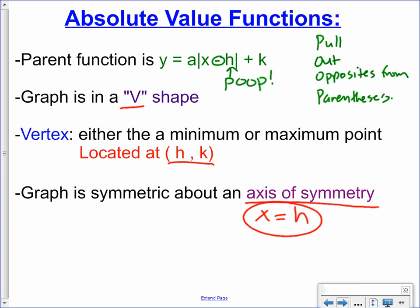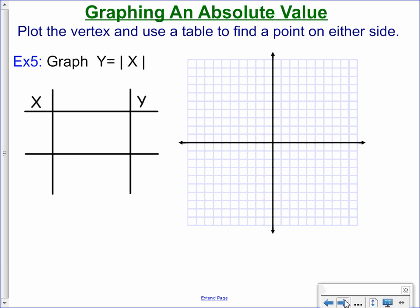Let's look at graphing an absolute value, starting with the parent function so we have something to compare. For example 5, the parent function is y equals the absolute value of x. You can think of this as y equals 1 times the absolute value of x minus 0, plus 0. The a is 1, and the zeros indicate h and k. The very first thing you want to look for is the vertex — since h and k are both 0, the vertex, the very tip of the V, is at (0, 0). That's usually the first point we plot.